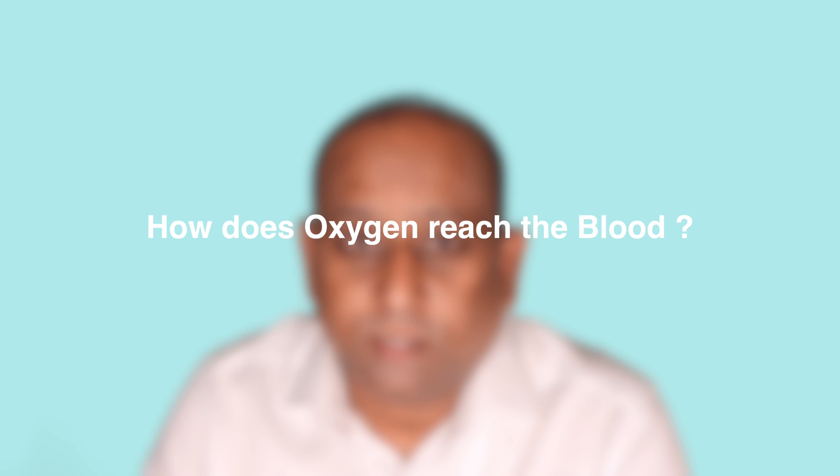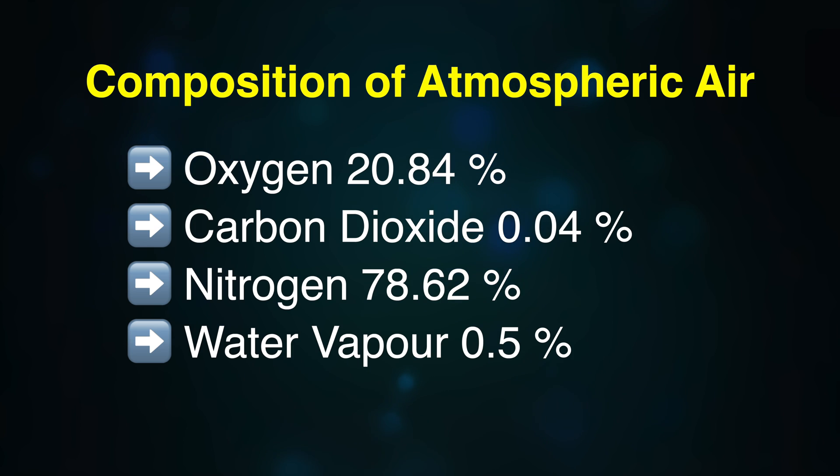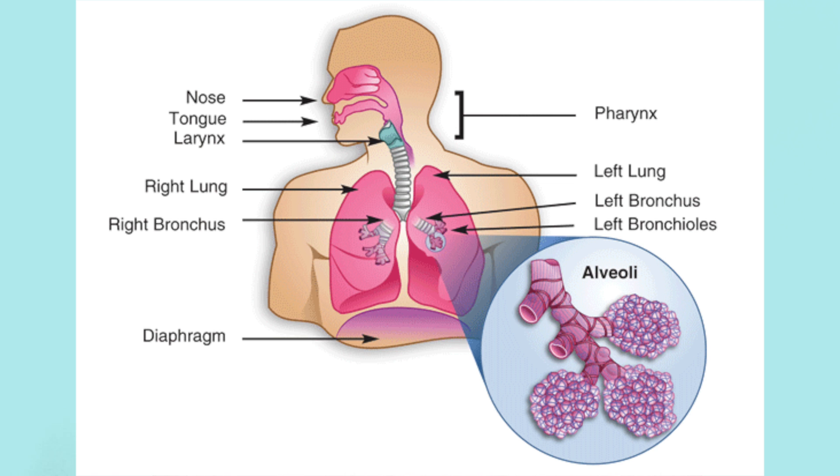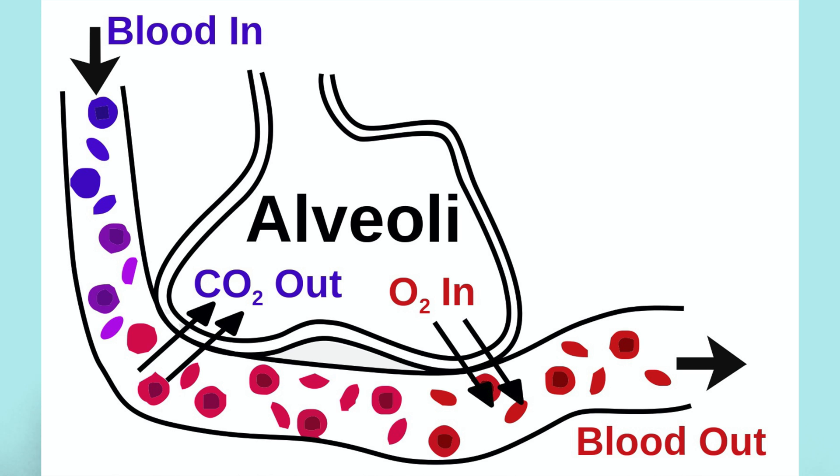It measures how much oxygen is carried by the blood. But how does oxygen reach the blood? When we breathe, we are breathing the air around us. The percentage of oxygen in the air is around 21%, and when we breathe, oxygen enters the lungs.